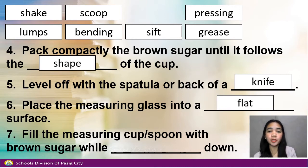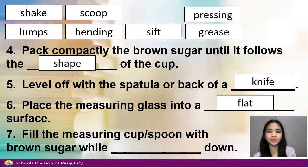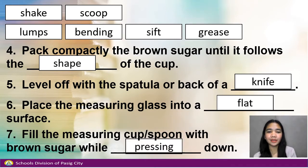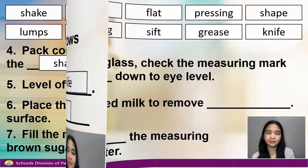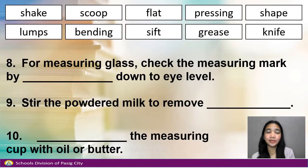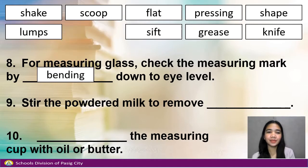Number 7. Fill the measuring cup or spoon with brown sugar while blank down. Answer: Pressing. Number 8. For measuring glass, check the measuring mark by blank down to eye level. Answer: Bending. Number 9.